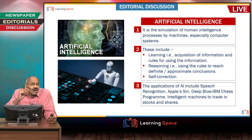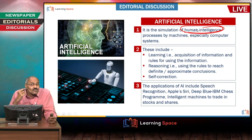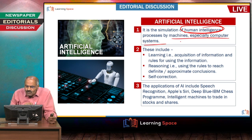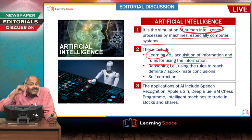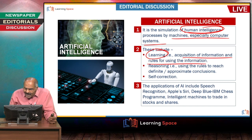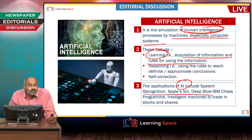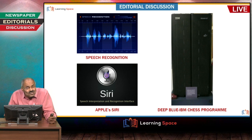Artificial intelligence is the simulation of human intelligence in machines — especially computers. It includes learning, which is the acquisition of information and rules for using it; reasoning, arriving at definite or approximate conclusions; and self-correction. Applications of artificial intelligence include speech recognition, Apple's Siri, IBM's Deep Blue chess program, and intelligent stock-purchasing programs.